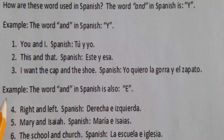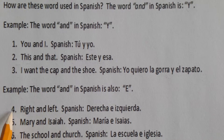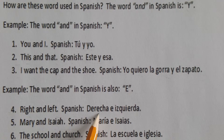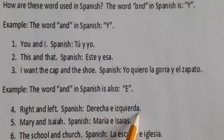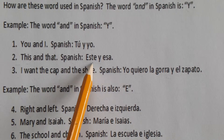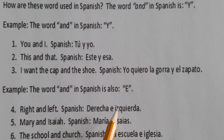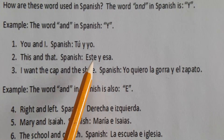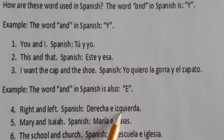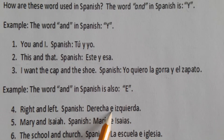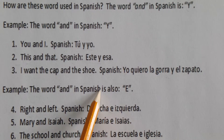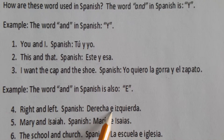Okay, another example. The word 'and' in Spanish can also be 'e.' Número cuatro: 'right and left' — in Spanish, 'derecha e izquierda.' Because if I use 'y,' it's going to sound like 'e izquierda,' so I want to break the sound. Instead of 'derecha y izquierda,' I say 'derecha e izquierda.'